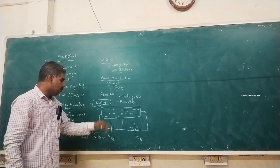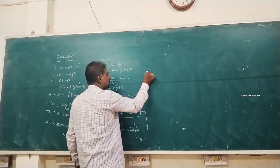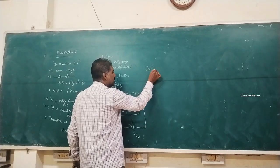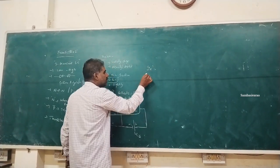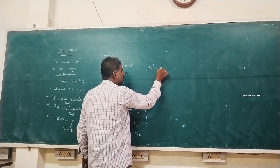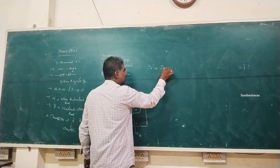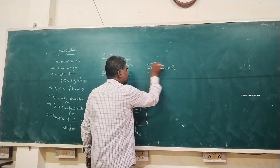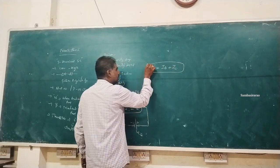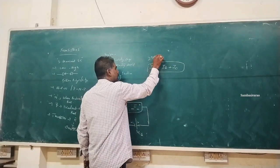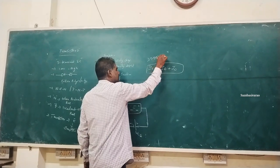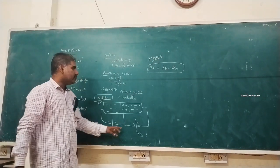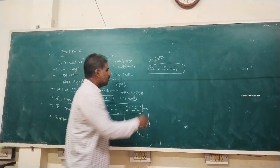While moving, the charge carriers give rise to emitter current IE, base current IB, and collector current IC. This gives the transistor equation: IE equals the sum of IB and IC.